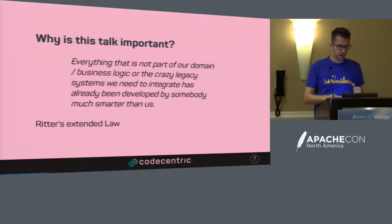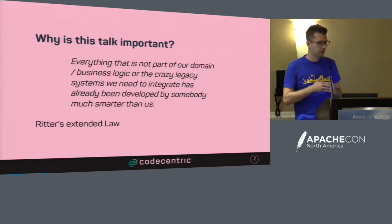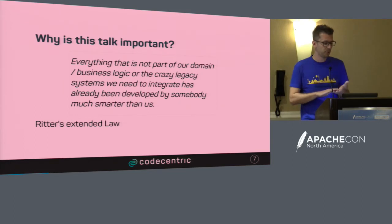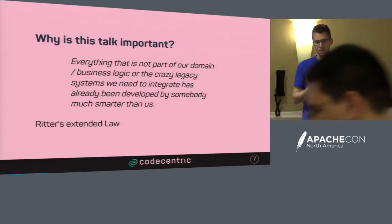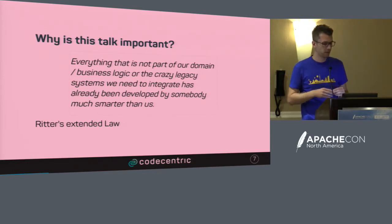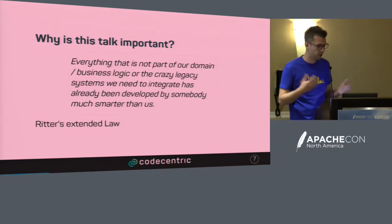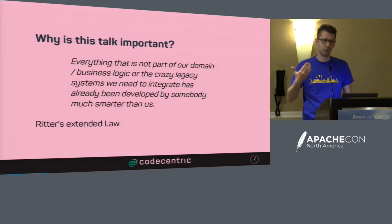There's also an extended Ritter's Law, which I learned after getting into IT consulting: everything that's not part of your core domain or business logic - or the crazy legacy system you happen to need to integrate - has already been implemented. Sometimes there are crazy systems with no library available, and that's where you'd need to implement the technical plumbing. But otherwise, you should focus on business functionality and not on I/O, codec, or compression. There are libraries for that, and Apache Commons maintains a set of useful ones.